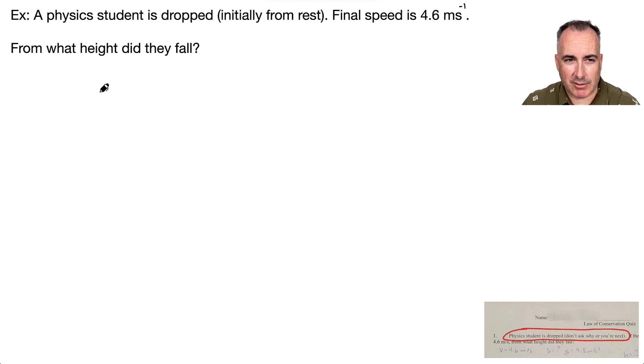So if I'm going to do a diagram, then it'll be something like this. So maybe this is the ground, and this is a little person right here. I don't know why they were dropped. Sounds kind of mean, but there we go. And there's a height here. We're trying to find it. We know they're initially at rest here. And we know that their final speed is 4.6, and that's going to be down. So let's write down what we know here. Let's write down S, U, V, A, and T.